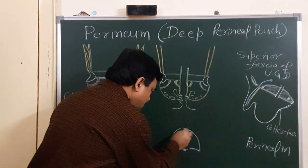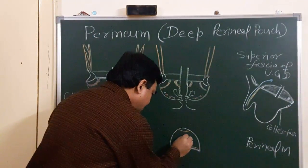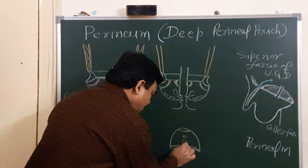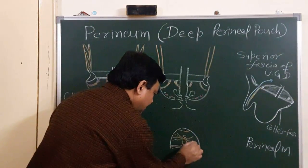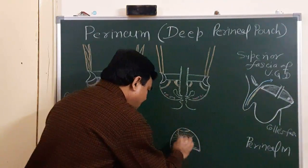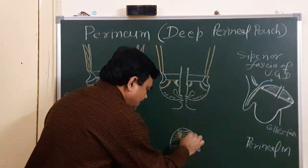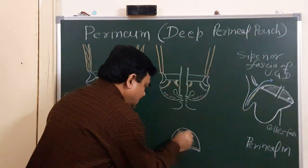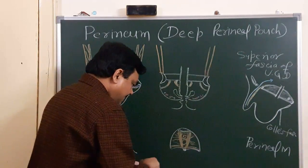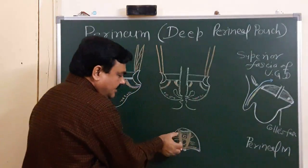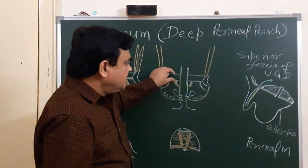In the case of female, here is the deep transverse perineal muscle, and here is the opening of the urethra and the opening of the vagina. Transversely arranged fibers cross between the urethra and vagina, and here are longitudinally arranged fibers. Here is the transverse perineal ligament. So the deep transverse perineal muscle and the sphincter urethra together form the urogenital diaphragm, which is the content of the deep perineal pouch.